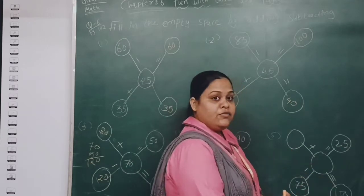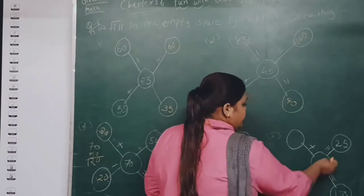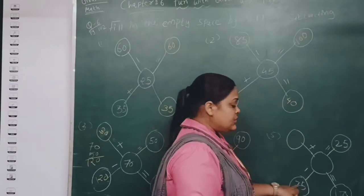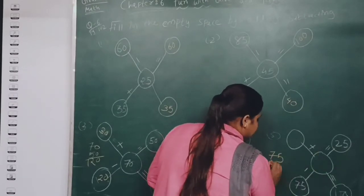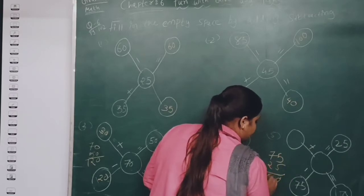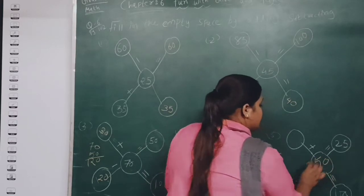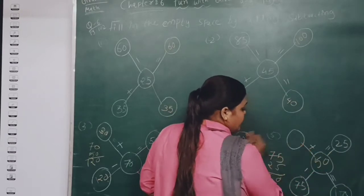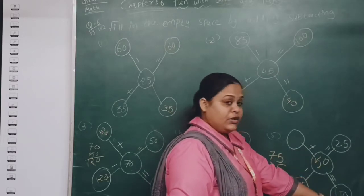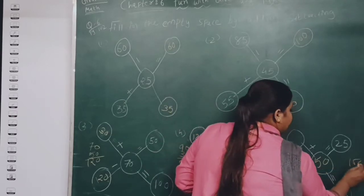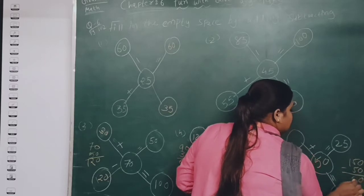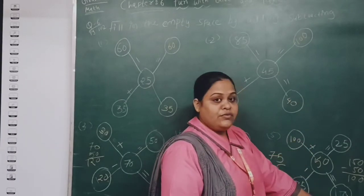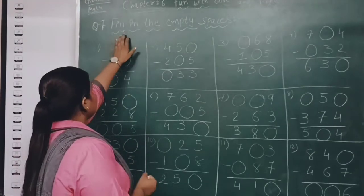Moving to the next. Here also empty boxes — we have to find the center box. 75 and 25 are given with a minus sign. 75 minus 25: 5 minus 5 is 0, 7 minus 2 is 5, so the answer is 50. When we minus 75 minus 50 we get 25, so our answer is correct. Adding both numbers gives 150, and 150 minus 50 gives 100. So the missing number is 100.